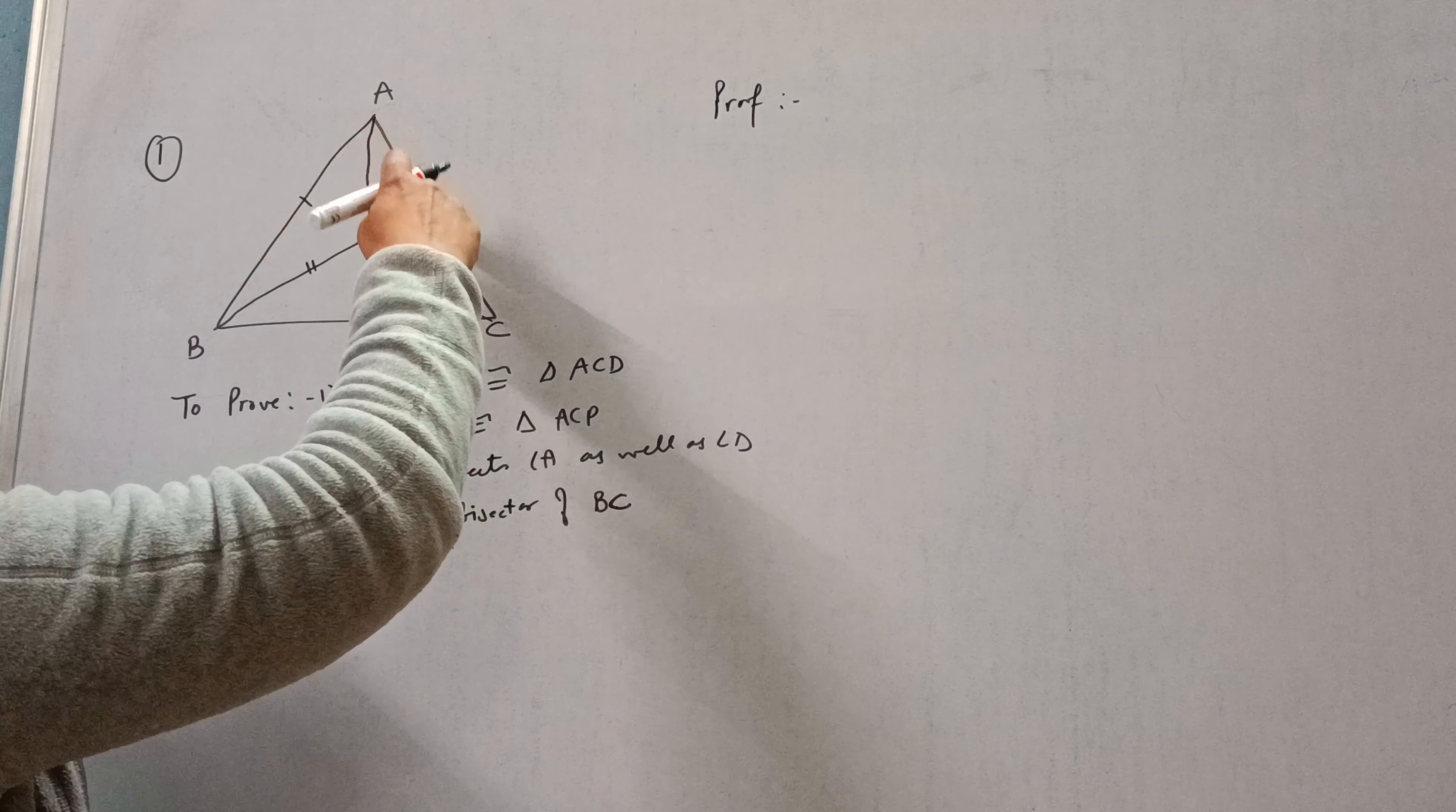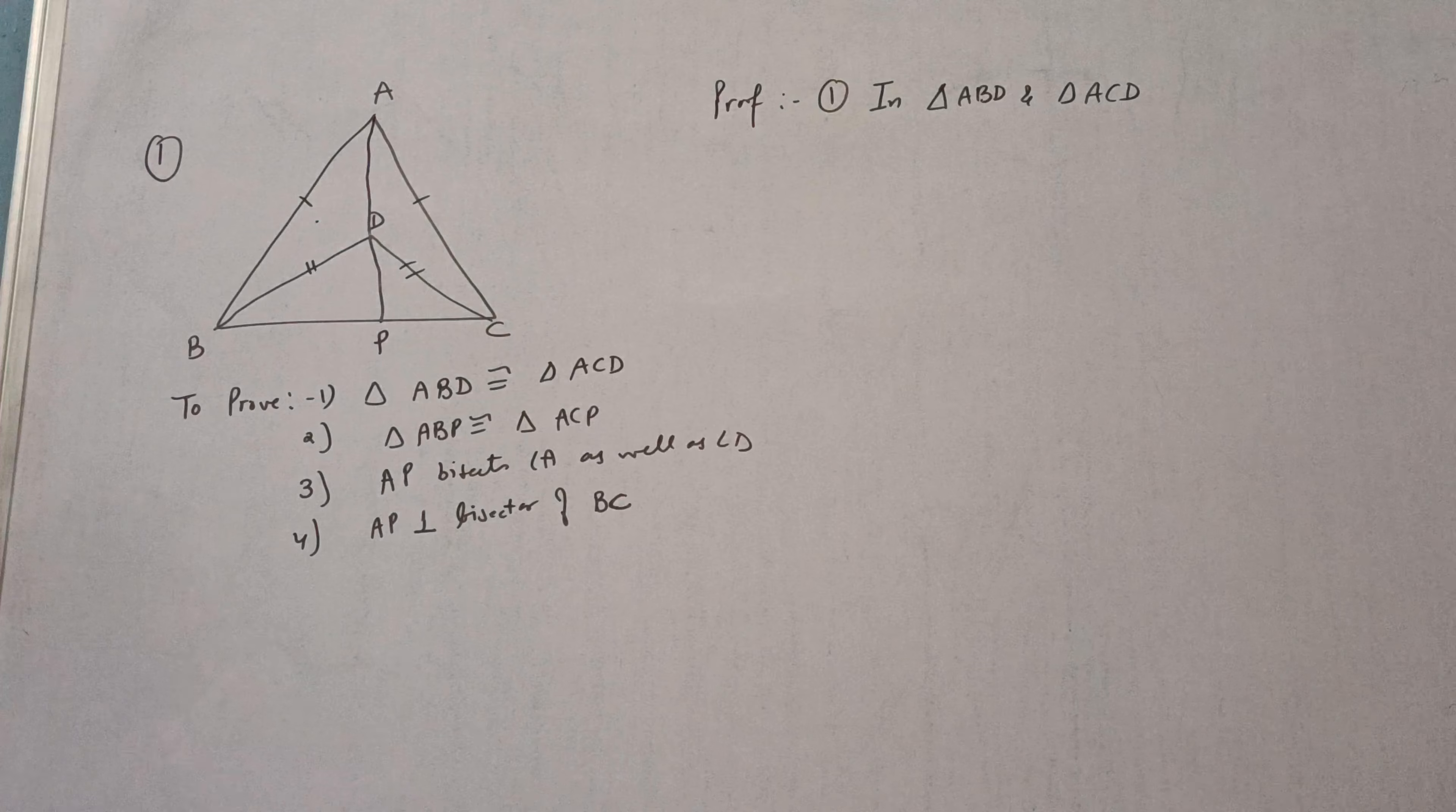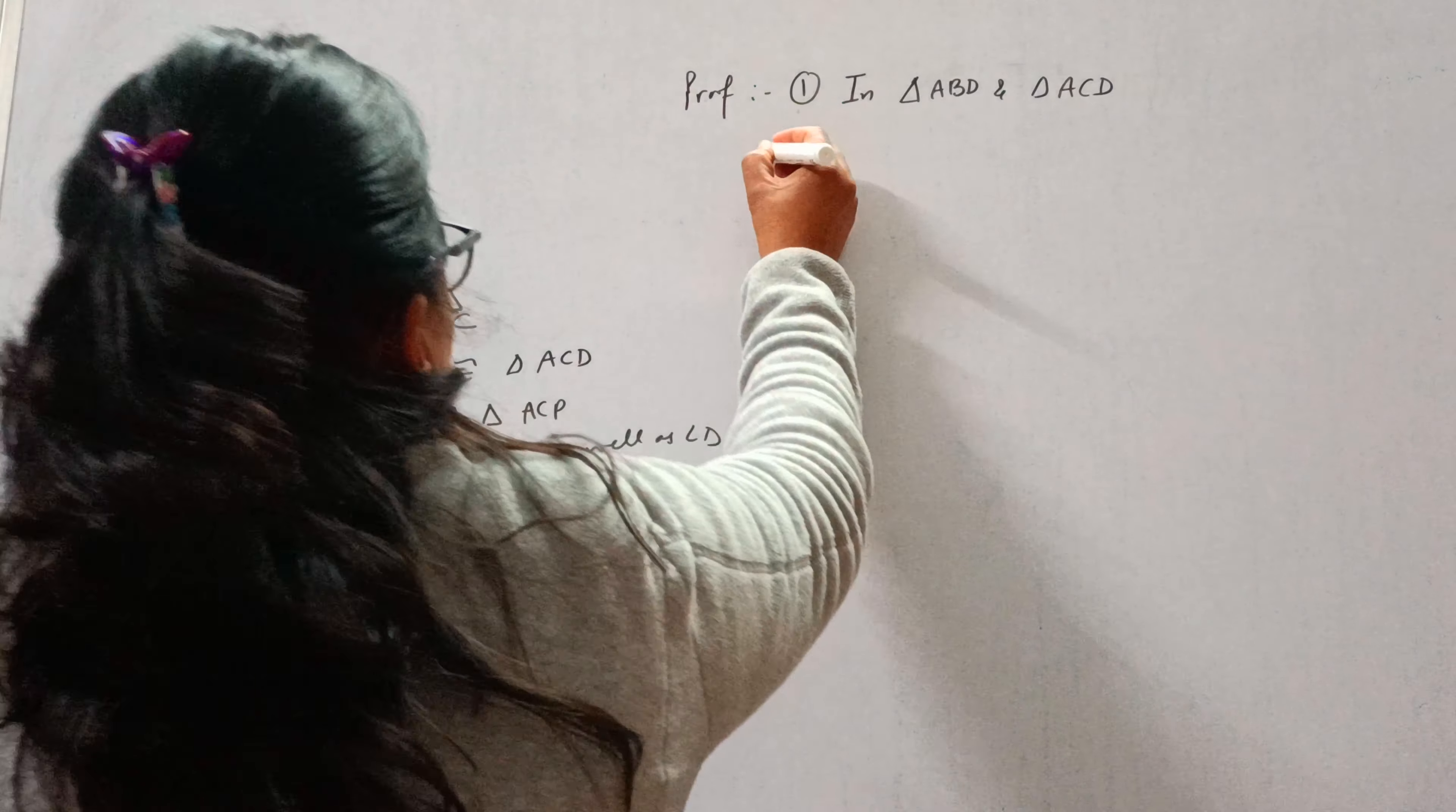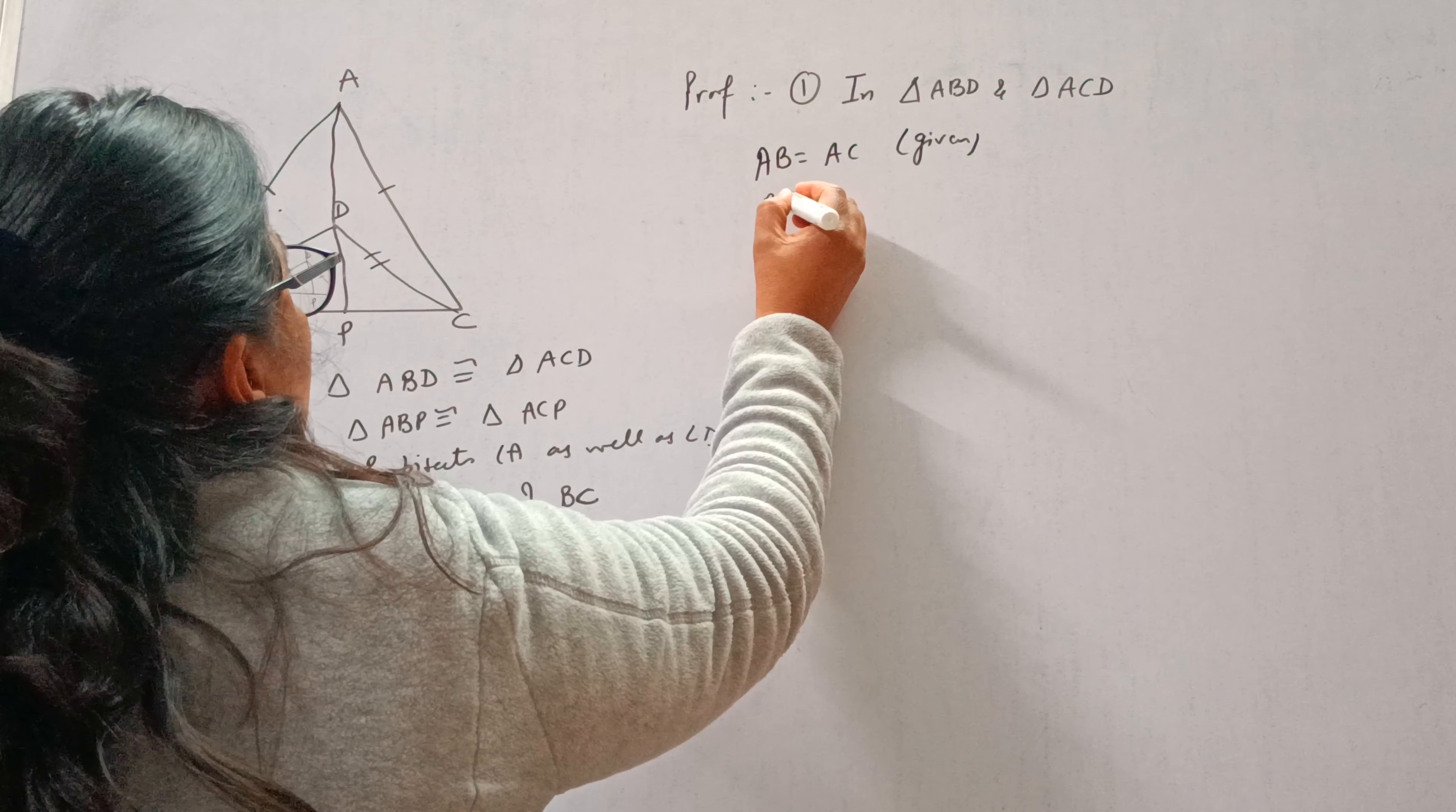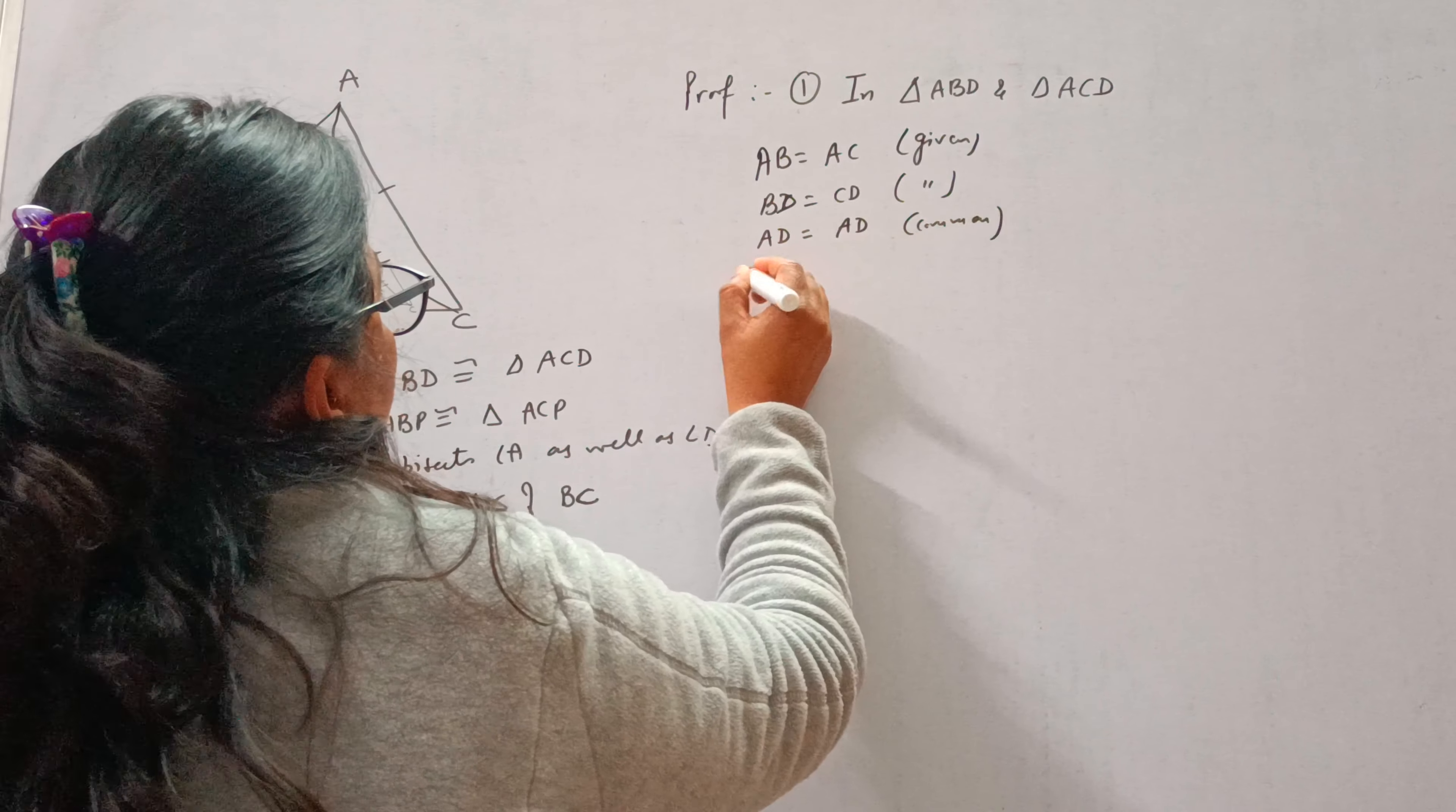In triangle ABD and triangle ACD: AB is equal to AC, it is given to us. BD is equal to CD, this is also given to us. And AD is common. So triangles are congruent.